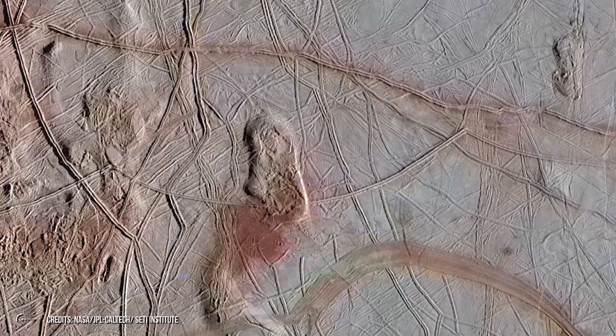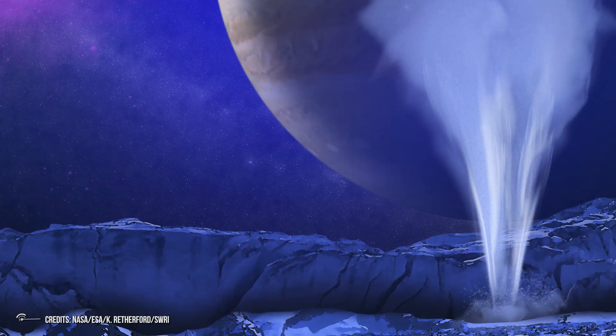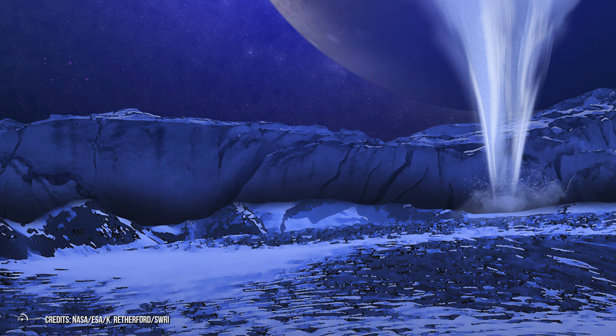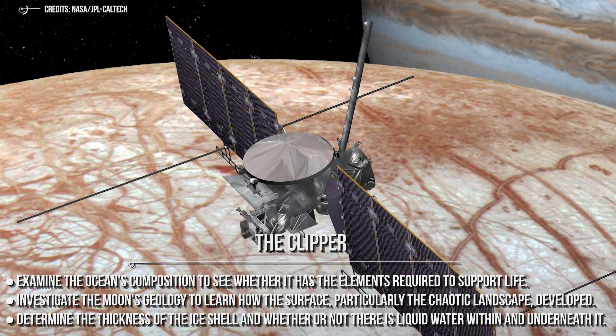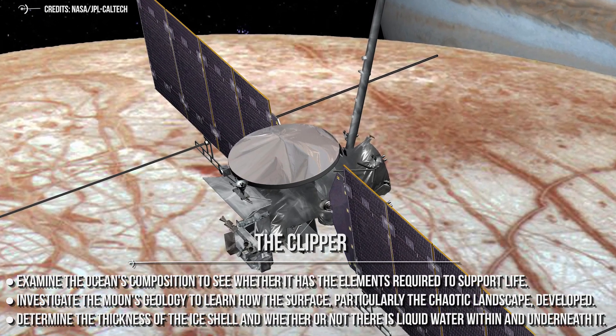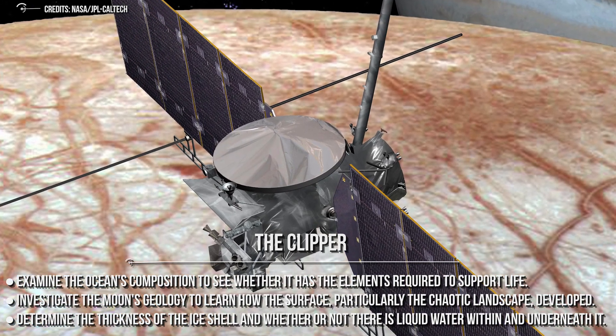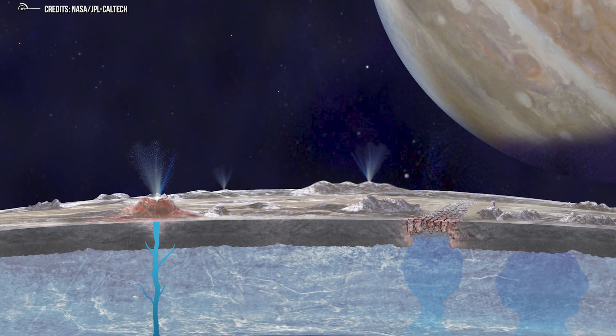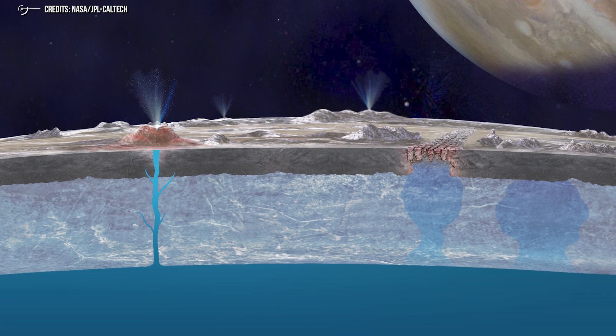The Clipper mission is the first dedicated to Europa. We believe we know a lot about Europa, but haven't been able to confirm it. On top of this, the Clipper mission will also lay the foundation for future Europa missions, especially a lander mission on Europa, which can directly detect life. The Clipper is intended to achieve three major goals: Examine the ocean's composition to see whether it has the elements required to support life. Investigate the moon's geology to learn how the surface, particularly the chaotic landscape, developed. Determine the thickness of the ice shell and whether or not there is liquid water within and beneath it. They will also influence how the ocean interacts with the surface. Is there anything in the ocean that rises to the surface through the shell? Is there any stuff from the surface that makes its way into the ocean?